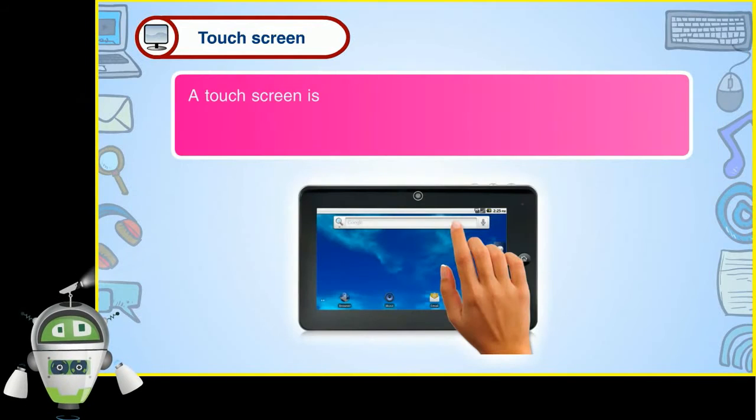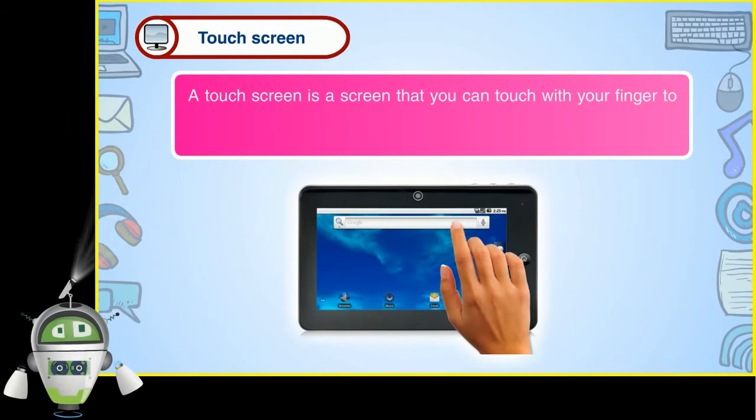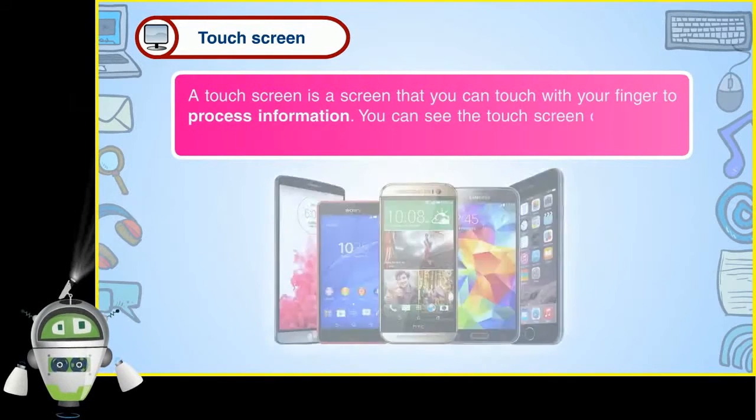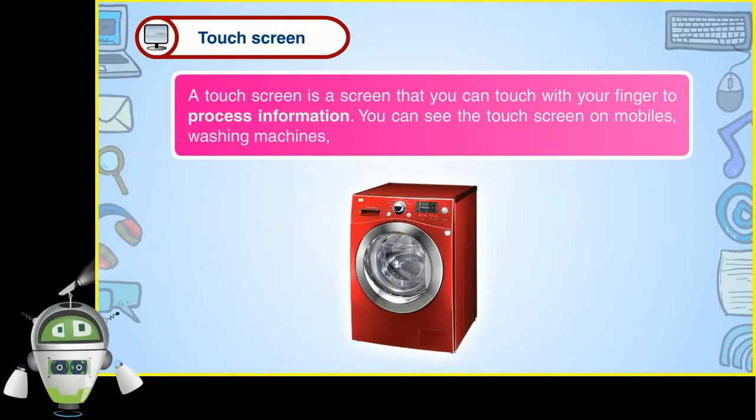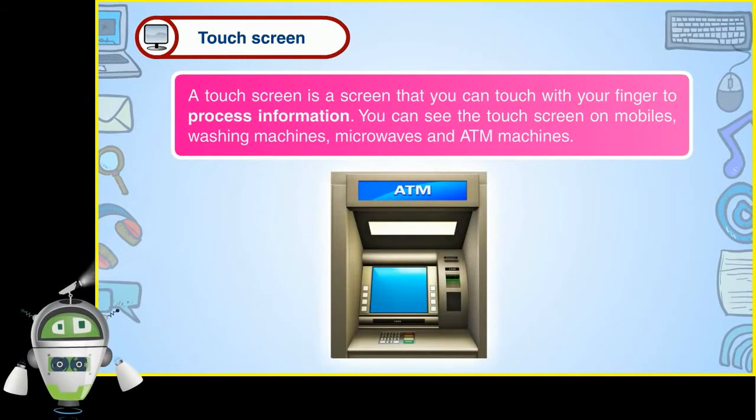Touchscreen: A touch screen is a screen that you can touch with your finger to process information. You can see the touch screen on mobiles, washing machines, microwaves and ATM machines.